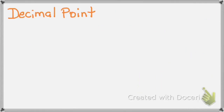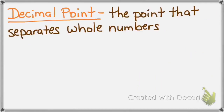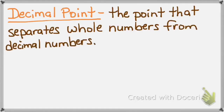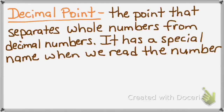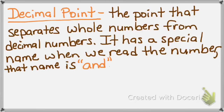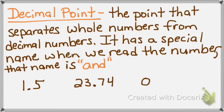The next vocabulary word is decimal point. A decimal point is the point that separates whole numbers from decimal numbers. A decimal point has a special name when we read the number — that name is 'and.' For example, we read this number 'one and five tenths.' We don't say 'one decimal five tenths.' We say 'one and five tenths' because the decimal point's name is 'and.' This number we read as '23 and 74 hundredths,' and this number we read as 'zero and 968 thousandths.' So when you read a decimal number, its name is 'and.'